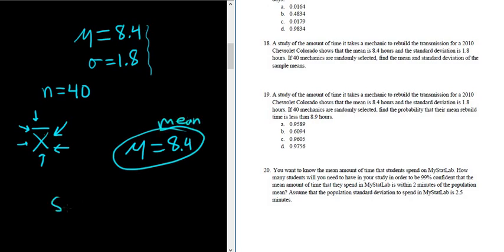Now for the standard deviation, there's a formula. It's sigma divided by the square root of n. So in this case, sigma is 1.8. And then n is 40, so we get the square root of 40.